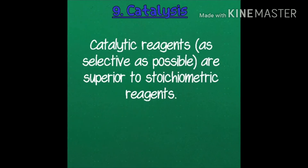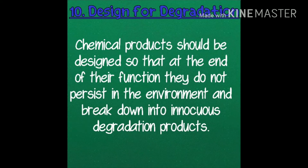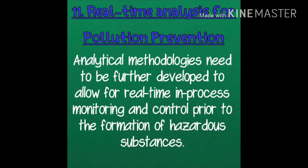Principle 9: catalytic reagents, as selective as possible, are superior to stoichiometric reagents. Principle 10: chemical products should be designed so that at the end of their function they do not persist in the environment and break down into innocuous degradation products.